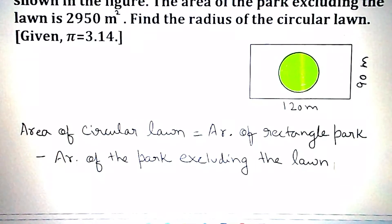Now, area of the circular lawn is equal to area of rectangle park minus area of the park excluding the lawn.